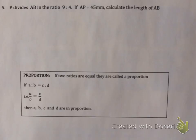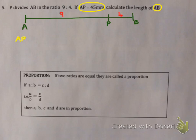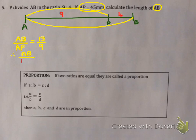Last question. Number 5 says P divides AB in the ratio of 9 to 4. If AP is 45mm, calculate the length of AB. Well there's AB. P divides it in a ratio of 9 parts to 4 parts. They have given me AP and they want AB. So it would make sense to look at AB over AP. Again having what you want to know at the top makes it easier. Now AB will be 13 parts and AP is 9 parts. So I'm now going to substitute in what I know.